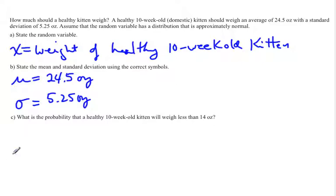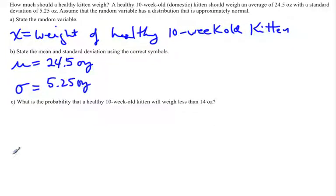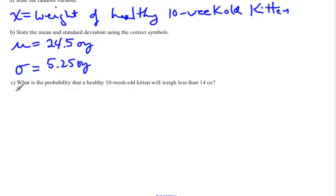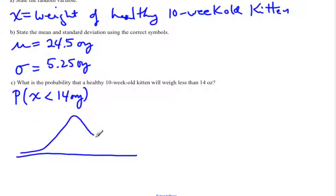In this problem we would like to find the probability that a healthy 10-week-old kitten weighs less than 14 ounces. So with every probability problem, you want to rewrite this in a statement: X is the weight of a 10-week-old kitten, and less than 14 ounces would look like this with a less than symbol. With most normal distributions it's very useful to draw a picture. The center of a normal distribution is the mean, so the center is 24.5. This is the x-axis, so this represents weights. And if we're looking at 14, 14 is below 24, so 14 would be down here. And if we're less than, then we're looking at that shading there.